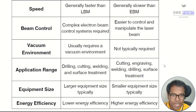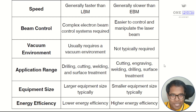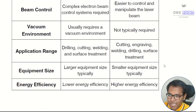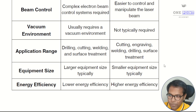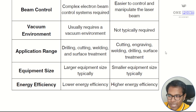Tenth is vacuum environment: electron beam machining requires a vacuum environment because air molecules would strike the electrons and slow them down, so a complete vacuum system must be in place. Laser beam machining requires no vacuum and can be done in open space. Eleventh is application range: electron beam machining supports drilling, cutting, welding, and surface treatment, whereas laser beam machining supports cutting, engraving, welding, drilling, and surface treatment — with engraving being more commonly associated with laser.